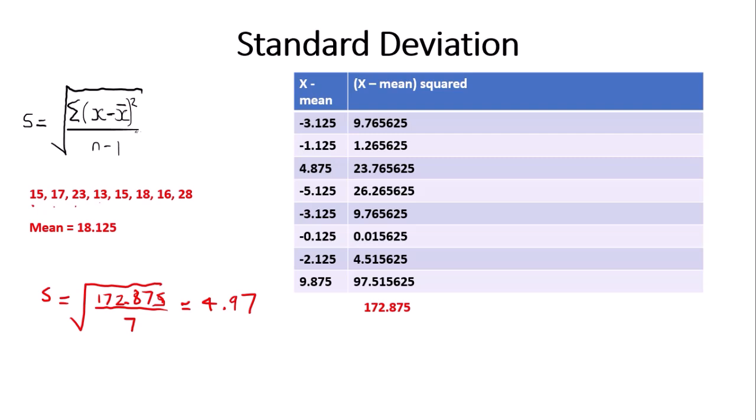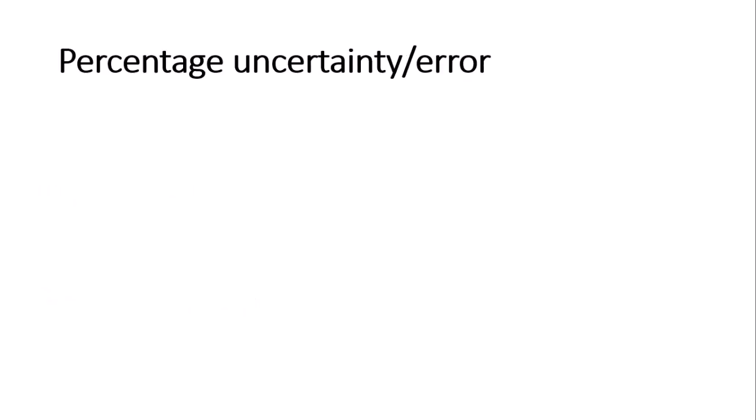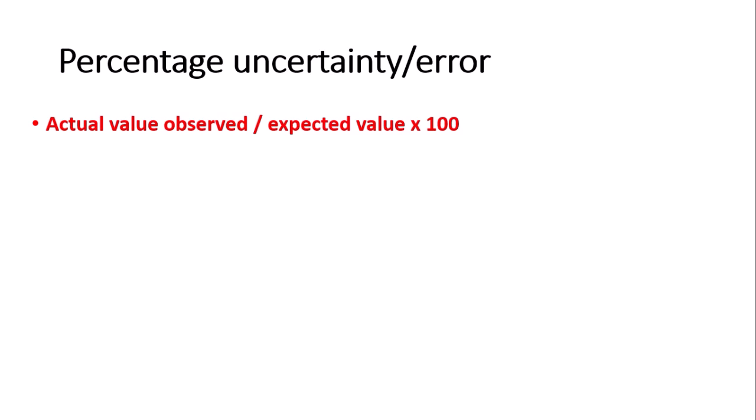You also need to be able to calculate the percentage uncertainty or error, which is something students often lose marks on — but it is really simple. The percentage uncertainty (sometimes called percentage error) is the actual value observed divided by the expected value, multiplied by 100.